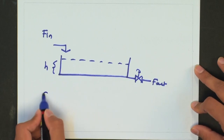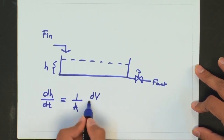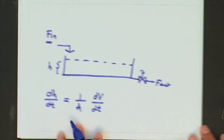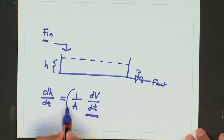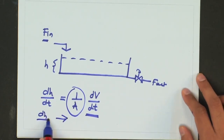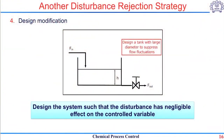This can be achieved because dH/dt is actually 1 over A times dV/dt, which is the change in volume. A change in F in is going to affect the change in volume, but I can always select a very large area such that dH/dt is very small and the height of the tank would not change much from its desired value. This is not a control strategy — it is just a design modification. This particular strategy is to design the system such that the disturbance has very little effect on the controlled variable.